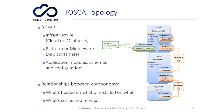In the TOSCA topology model you can describe three layers of a software stack: the infrastructure level, where you can model a server for example; the application and middleware layer; and the application modules, schemas and configurations to manage the application installed on the platform. There are different relationships between components, such as hosted on, installed on, or connected to.